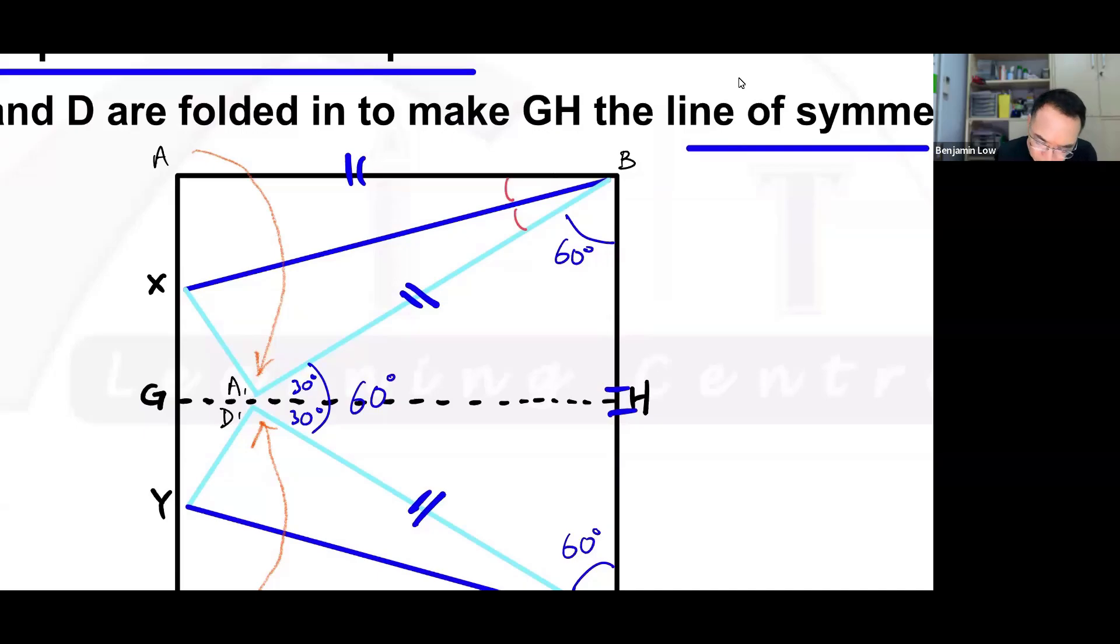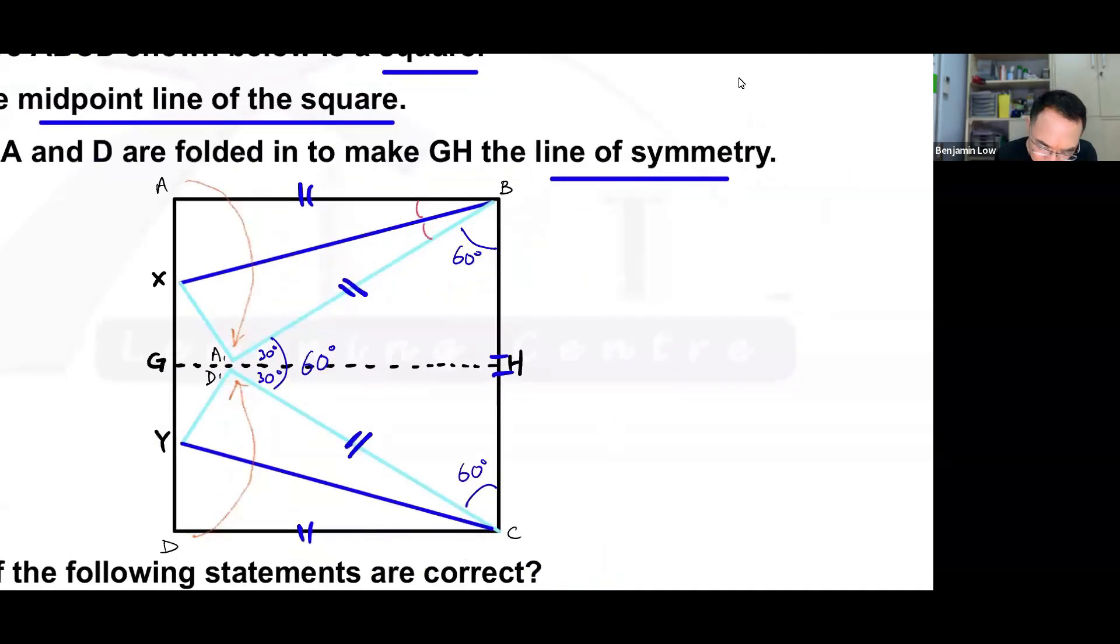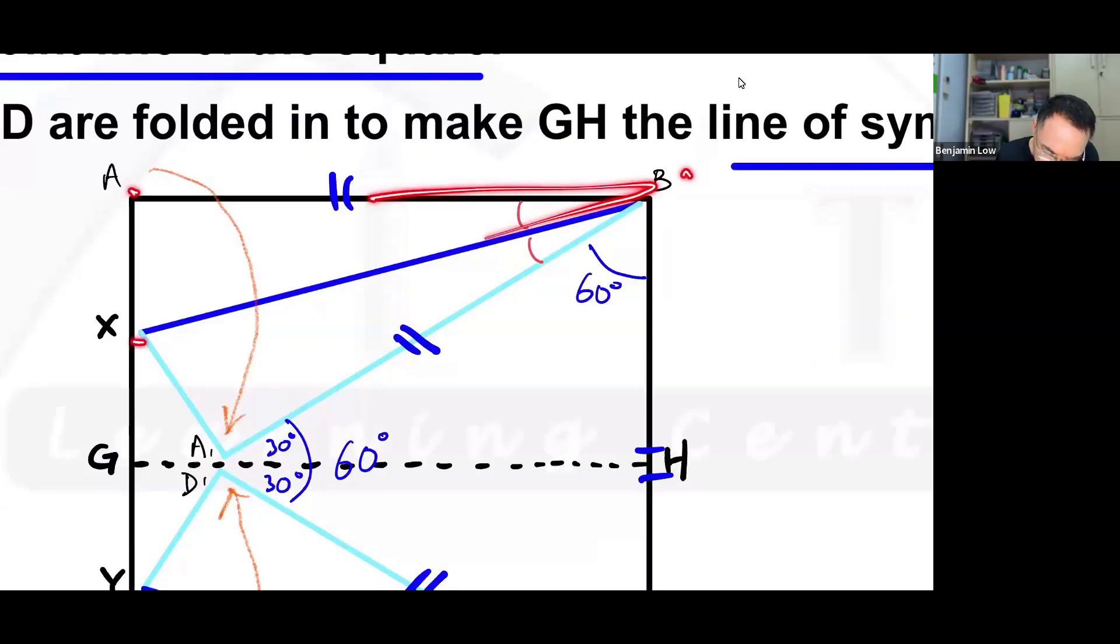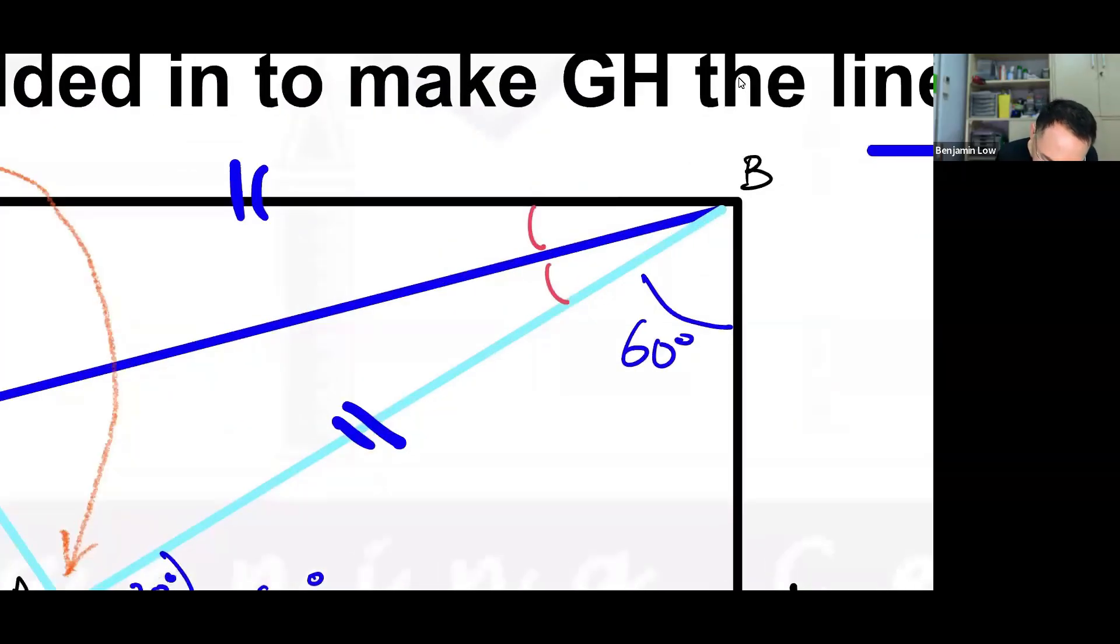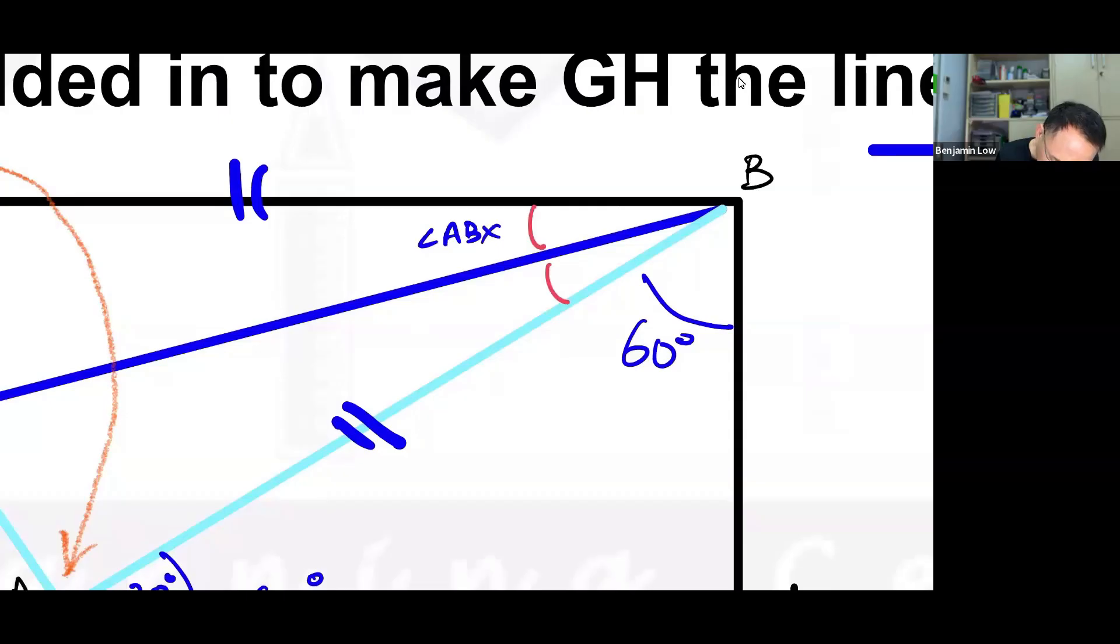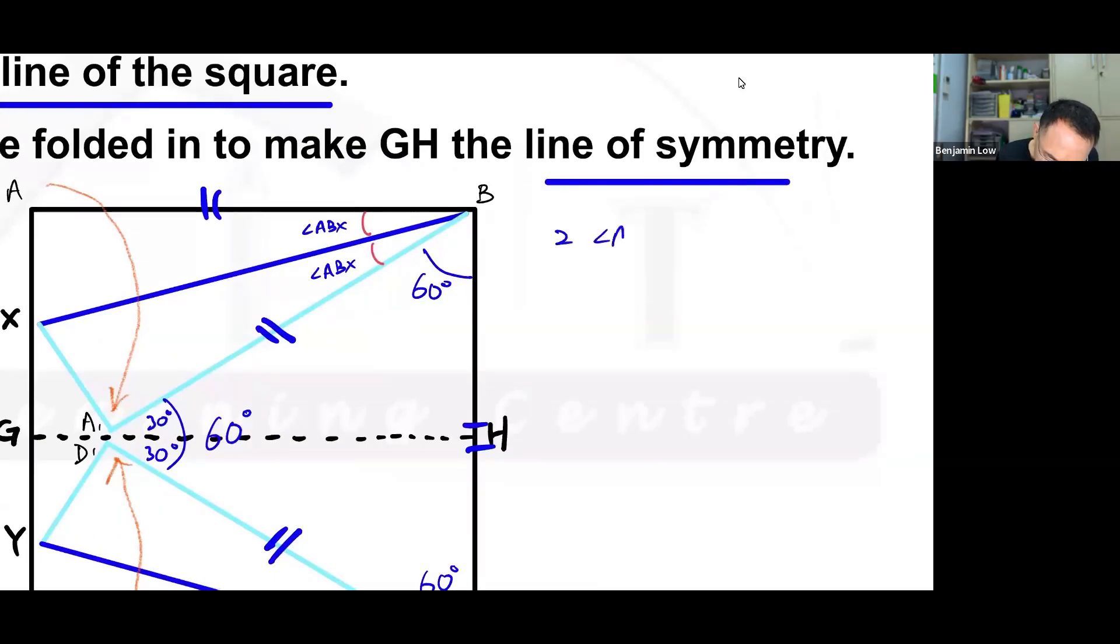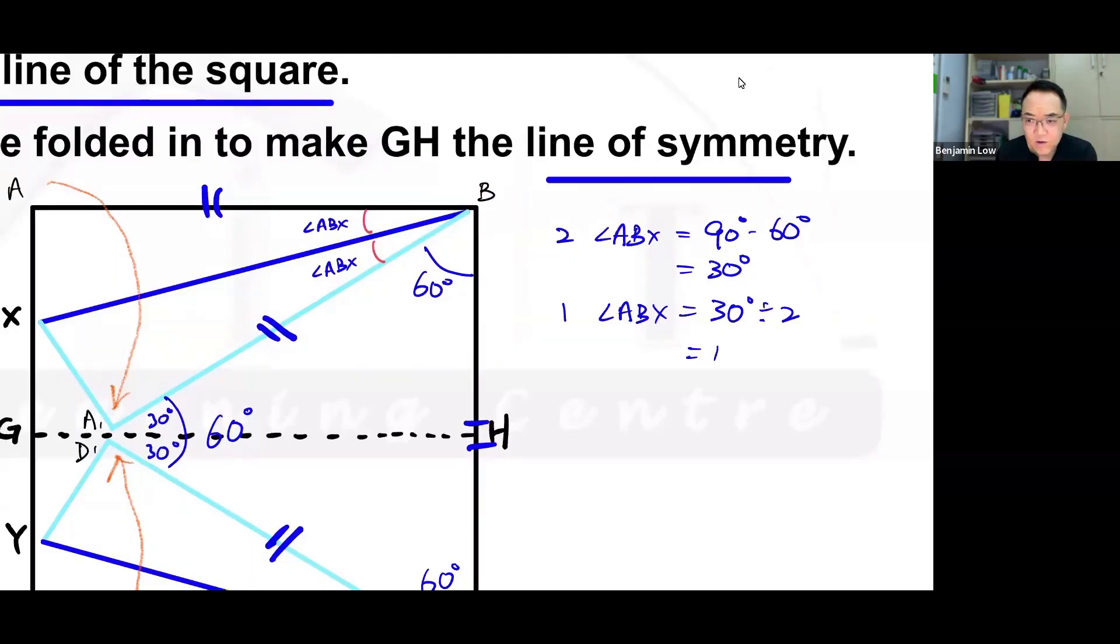Alright, so this is what you need to do. If you want to, you can pause this video. Otherwise, we're going to do this. So this angle, by the way, is called angle ABX. And this angle is called ABX as well, okay? Because both of them here are A. So angle ABX, so if this is angle ABX and this is also angle ABX and they are equal, then two of the angle ABX equals 90 minus 60 degrees. And that also means that each of them, one angle ABX equals 30 degrees divided by two. And that gives us 15 degrees.